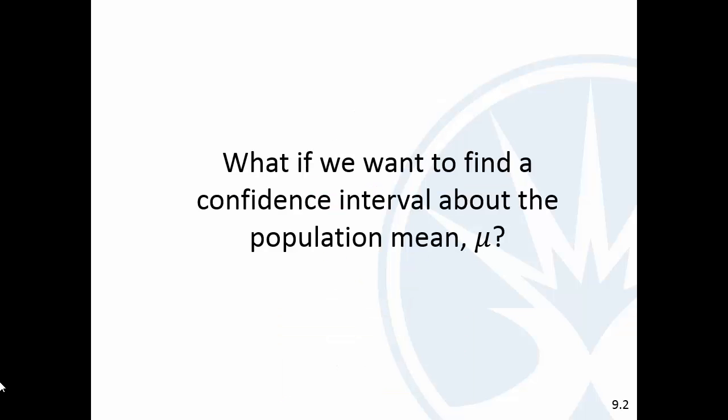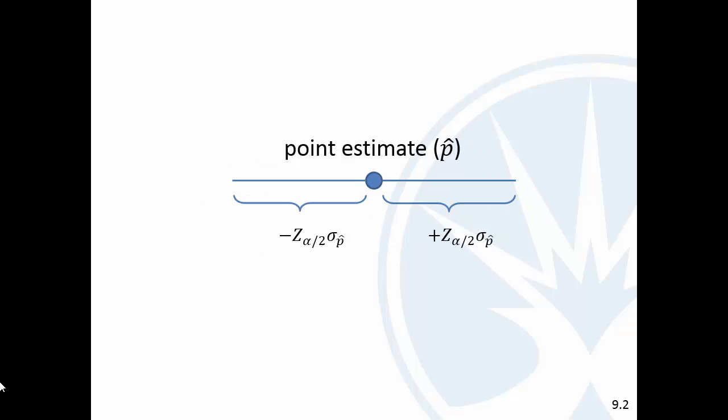So, what if we want to now kind of extend this idea and do a confidence interval about the population mean, mu? So, we have this point estimate for the proportion, plus or minus that number of standard deviations each way. Okay, and so, what if we just kind of swap that out and do an x-bar, and instead of a sigma p-hat, it's a sigma x-bar. It's the same idea, your point estimate in the middle. We know we have these conditions where x-bar can be normally distributed, so we could use all the same reasoning, and we could end up with the same thing, x-bar plus or minus z alpha over two times sigma x-bar.